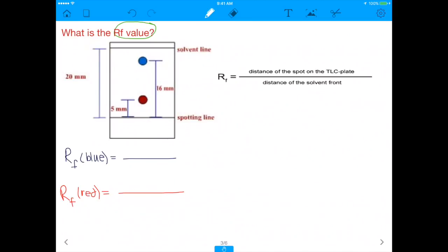The RF value is the distance of the spot on the TLC plate. So remember that when we separate things on a TLC plate, they'll often migrate differently based on how strongly attracted they are to the stationary phase. In this case, we have a blue dot and a red dot, and the red dot is clearly more attracted to the stationary phase, the polar silica gel, than the blue dot. So if you took a ruler and measured how far the blue dot went, you'd measure 16 millimeters, and the red dot went 5 millimeters. But the RF is the distance of the spot on the TLC plate over the distance of the solvent front. The solvent front is the distance the solvent migrates upwards.